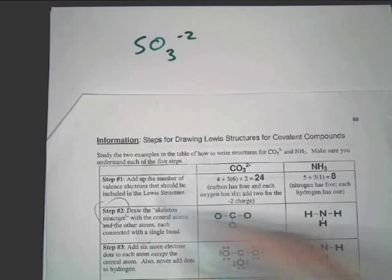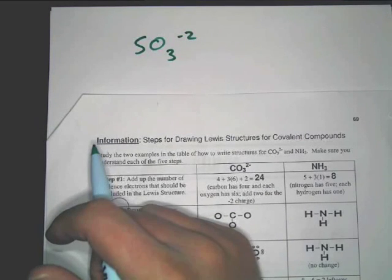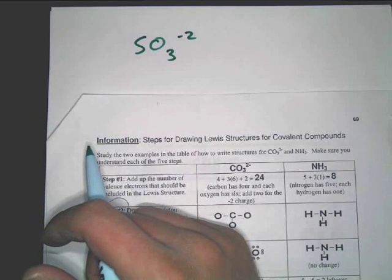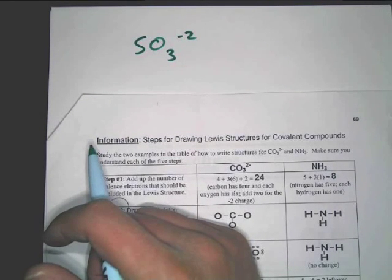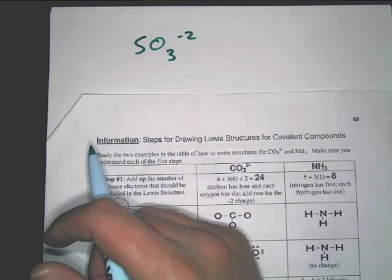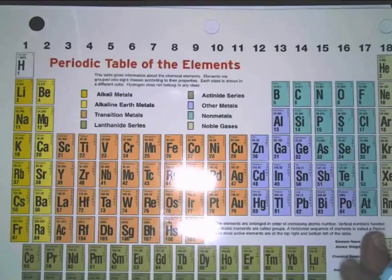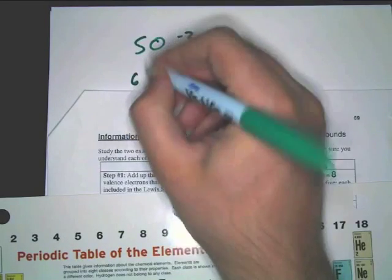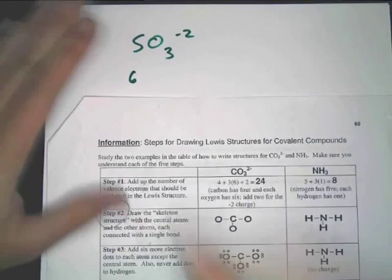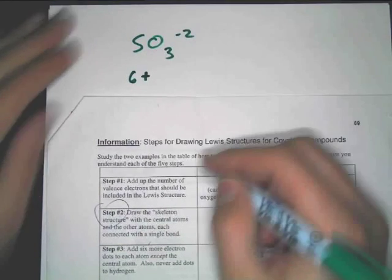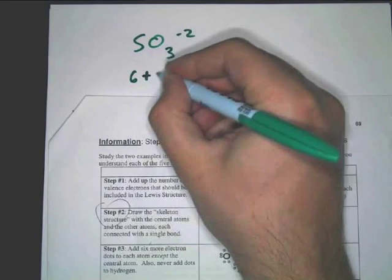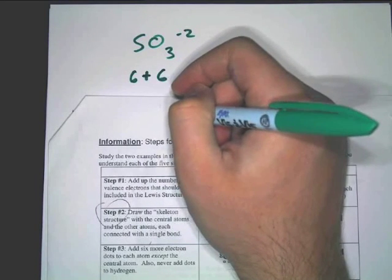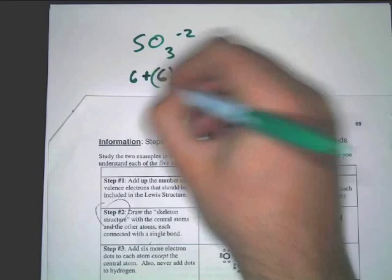Now, the first step is to figure out valence electrons. By this point in time in the year, I hope that this is not a problem. If you look at something like sulfur, you find it on the periodic table. You count over, 1, 2, 3, 4, 5, 6. It's got 6 valence electrons. Now, you're going to add that to oxygen. Oxygen also got 6 valence electrons. How many oxygens do you have, though? You've got to multiply it by 3.